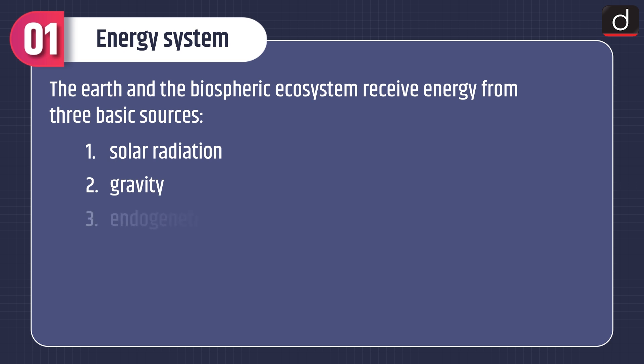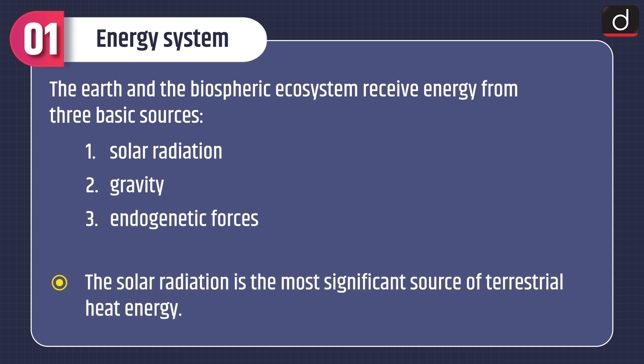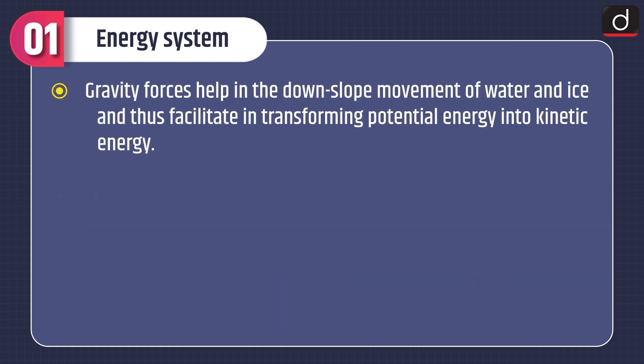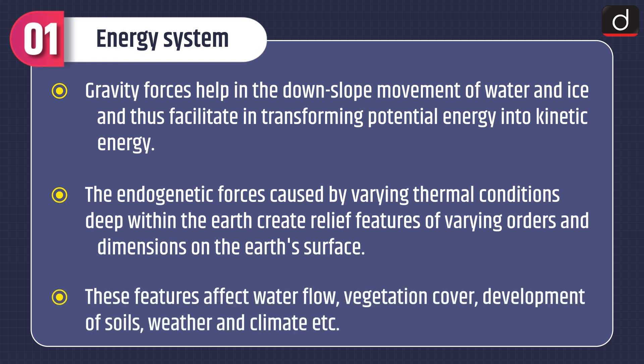The earth and the biospheric ecosystem receive energy from three basic sources: solar radiation, gravity, and endogenetic forces. Solar radiation is the most significant source of terrestrial heat energy. Gravity forces help in the downslope movement of water and ice, facilitating the transformation of potential energy into kinetic energy. Endogenetic forces caused by varying thermal conditions deep within the earth create relief features of varying orders and dimensions on the earth's surface, affecting water flow and vegetation cover.